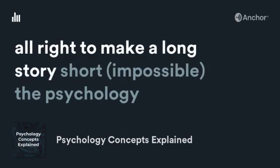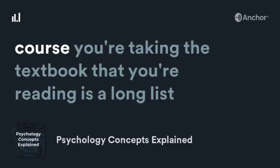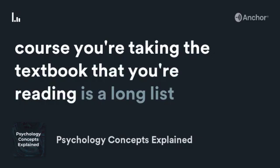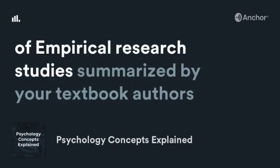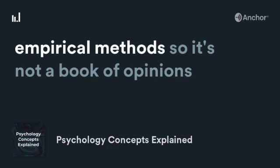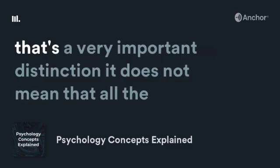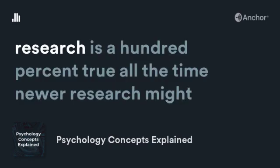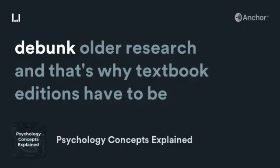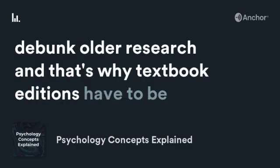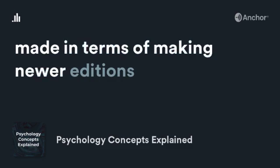To make a long story short, the psychology course you're taking and the textbook that you're reading is a long list of empirical research studies summarized by your textbook authors, and the research is based on empirical methods. It's not a book of opinions — that's a very important distinction. It does not mean that all of the research is 100% true all the time. Newer research might debunk older research, and that's why textbook editions have to be updated with newer editions.